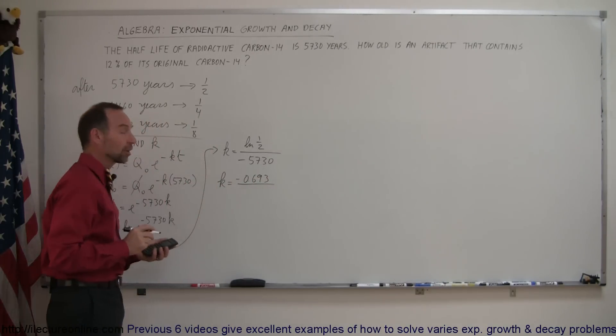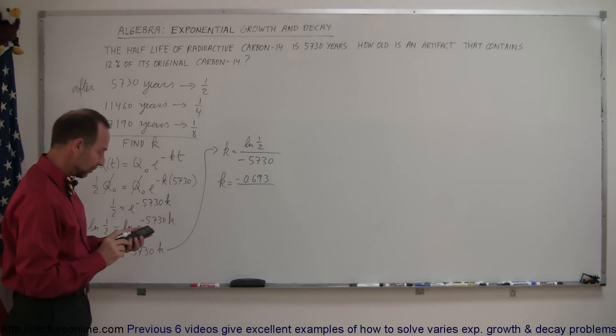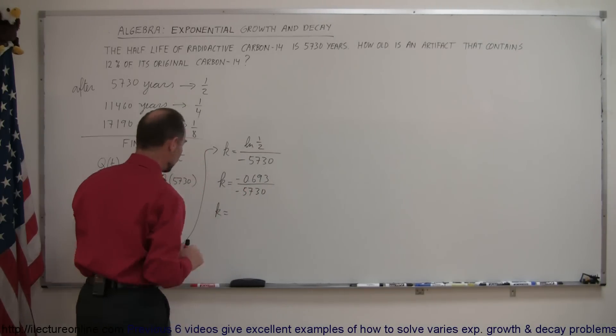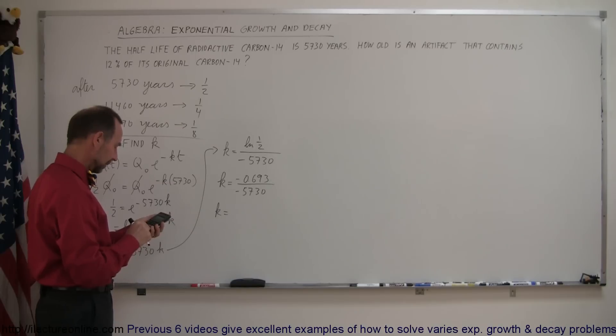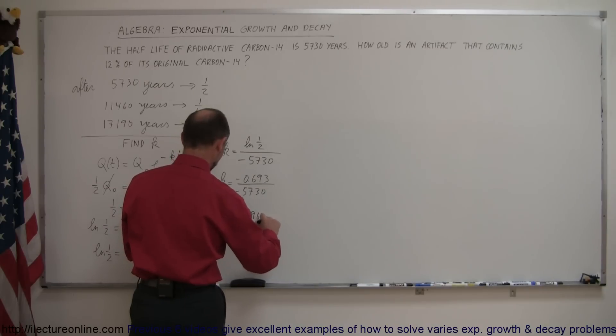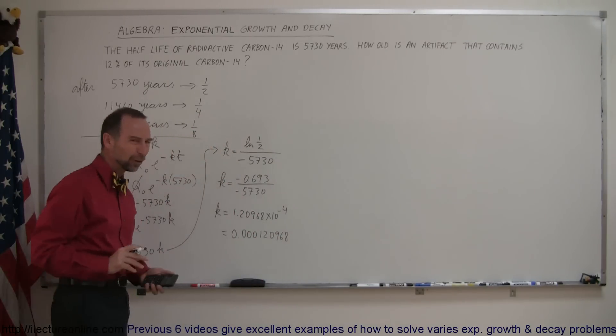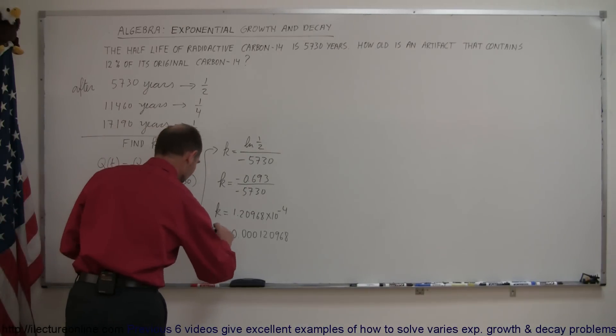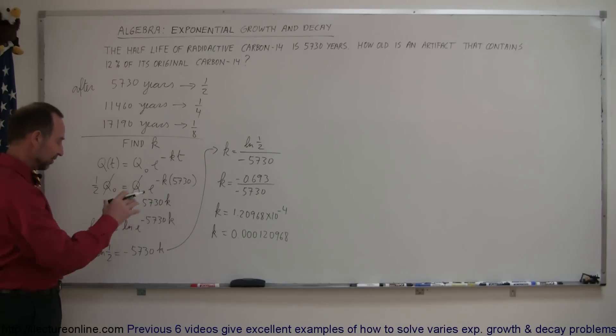So, whenever we deal with the natural log of one half, we get that number, 0.693 times negative 1 divided by 5730. And we get k is equal to 1.20968 times 10 to the minus 4. So, this is equal to 0.00012968. Now, of course, I don't need quite that many significant figures, but let's just keep it there to reduce the round-off errors. So, we don't want to make any mistakes or round-off errors here.